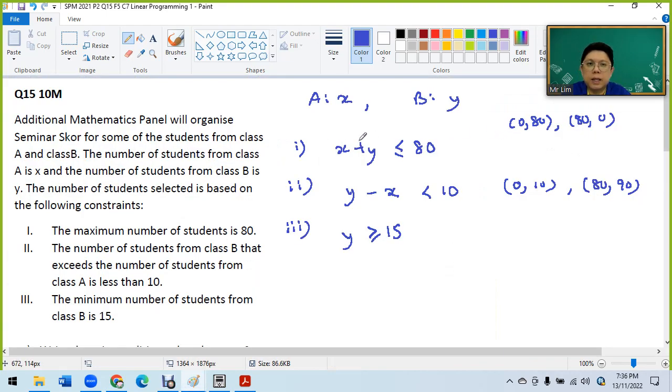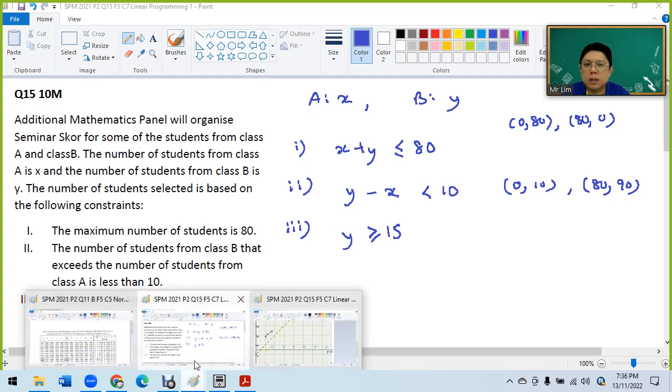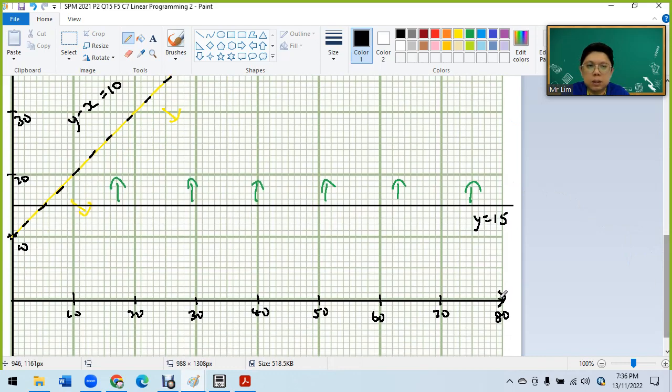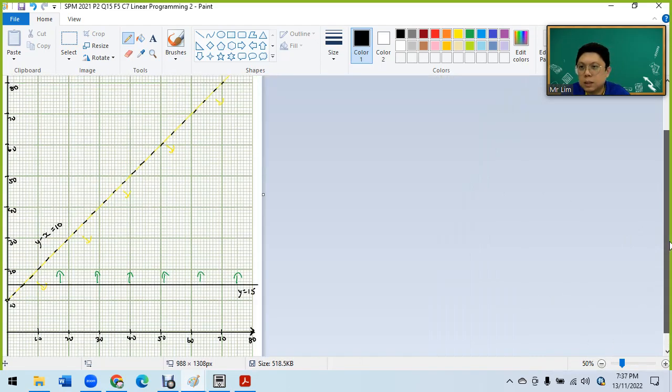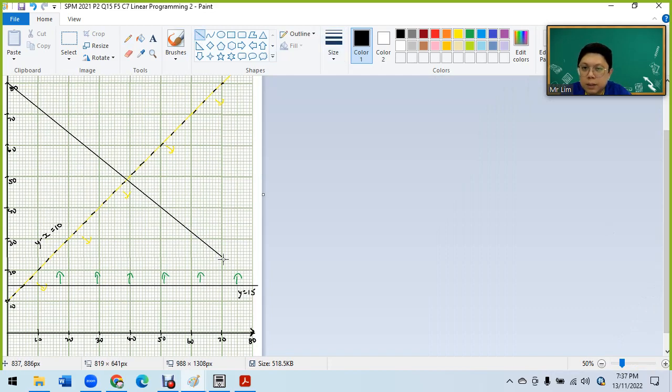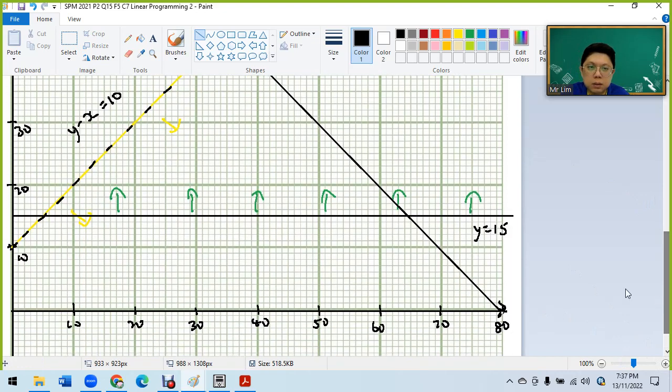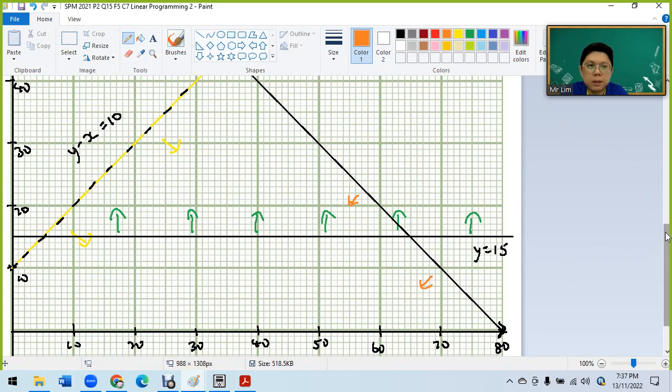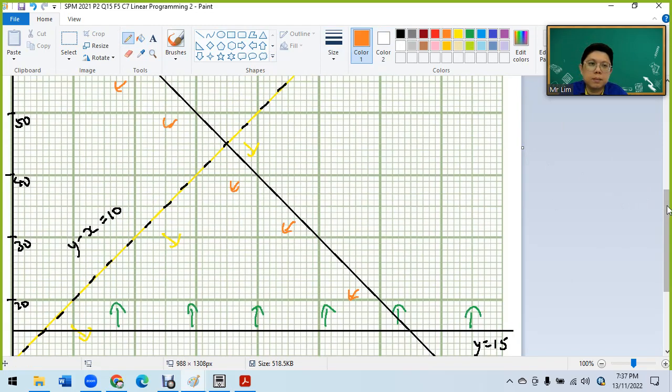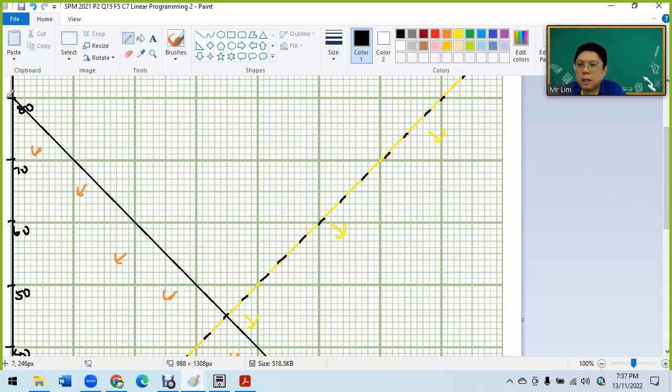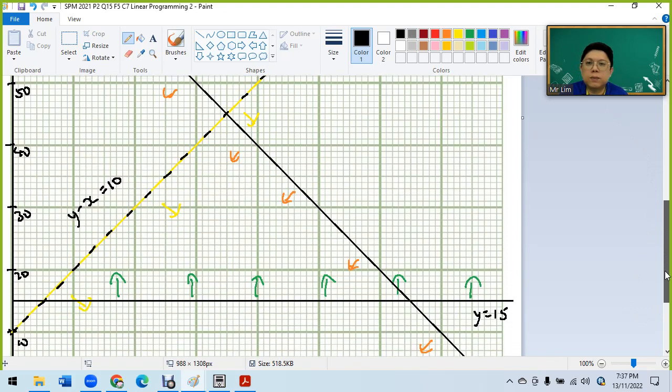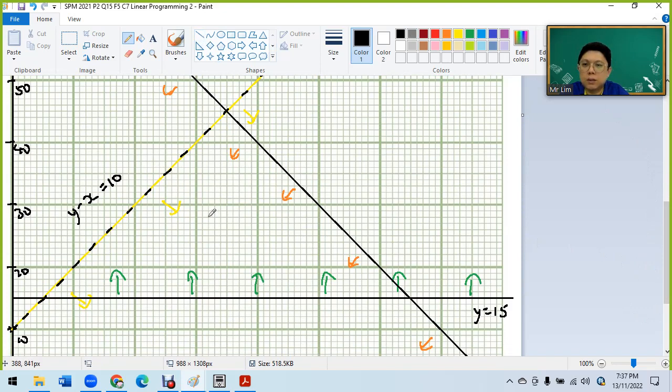Y minus X equals 10 passes through (0,10) and (80,90). Less than or equal means below the line. The shared region that satisfies all constraints is this area here.